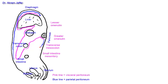At that reflection it becomes the mesentery of the small intestine — now it is visceral peritoneum again. As a double fold of visceral peritoneum it encloses the small intestine, and returns back as a double fold to the posterior abdominal wall. This is the mesentery of the small intestine.